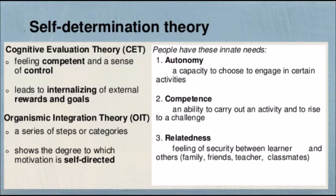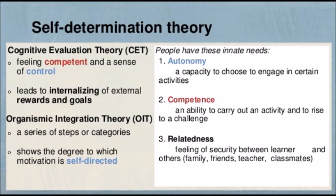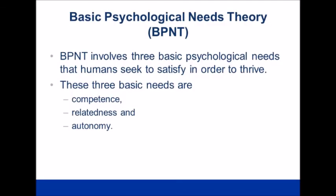From where were these three components picked? Competence and the sense of control were picked from cognitive evaluation theory. The concept of self-directed motivation was picked from organismic integration theory and placed into autonomy. And basic psychological needs theory already deals with competence, relatedness, and autonomy in the context of human well-being and psychological health.